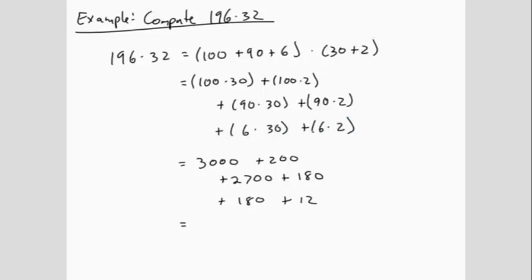And now we add it up. 3000 plus 200 is 3200, 3200 plus 2700 is 5900, 5900 plus 180 is 6080, plus another 180 is 6260, plus 12 more is 6272.